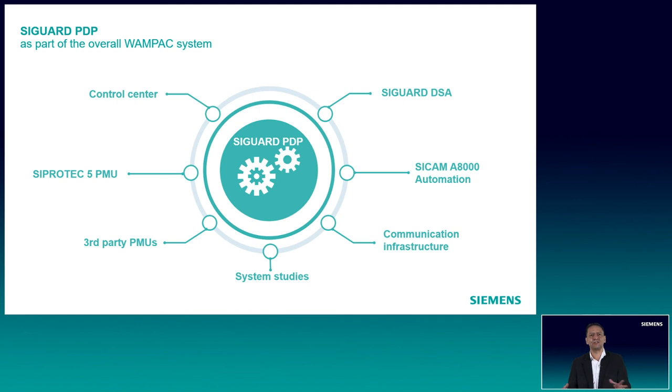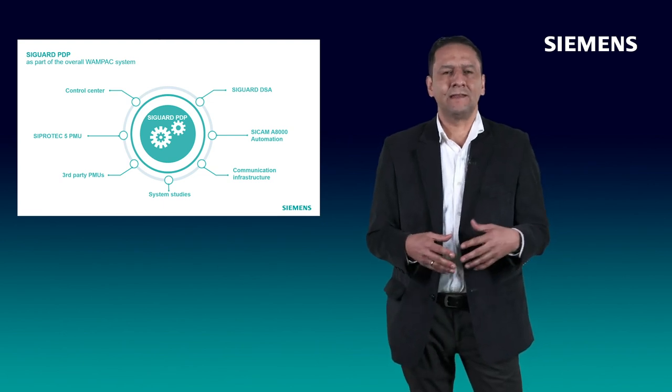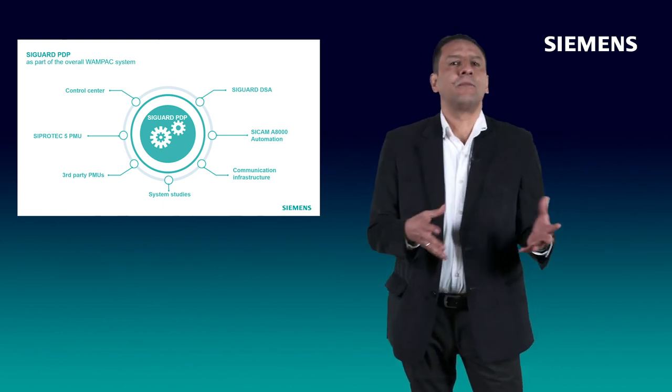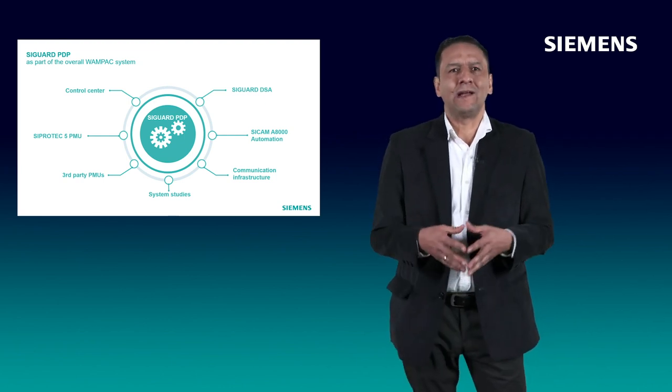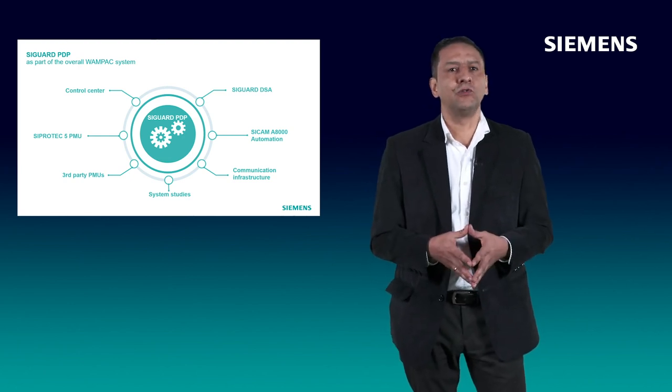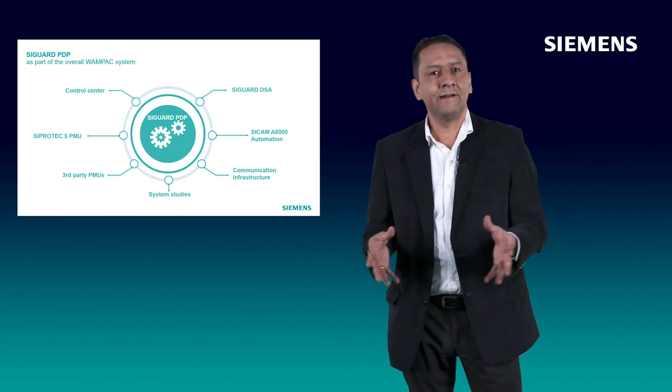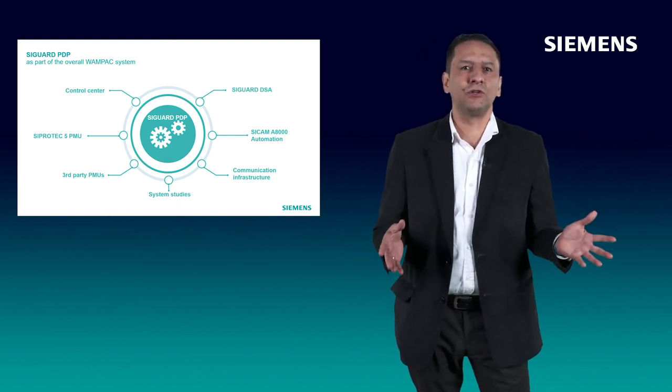Next, the installation of the PMUs in different areas of the network to detect the contingency following the system studies. Third, the installation of PMUs in the power system that are going to operate in case of contingency. Then we can enable in the control center the option to disable or enable the logics that we are going to create, or we can have an additional HMI to do it. Then we need the communication network. After learning a little bit about Wide Area Monitoring and Protection Systems, let's do a summary.